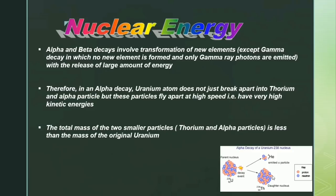Therefore, in an alpha decay, a uranium atom does not just break apart into thorium and an alpha particle — these particles fly apart at high speed, that is, they have very high kinetic energies. The total mass of the two smaller particles, thorium and the alpha particle, is less than the mass of the original uranium.